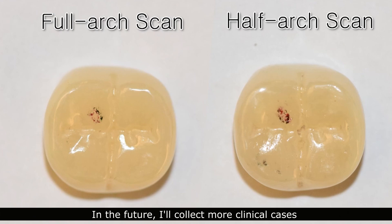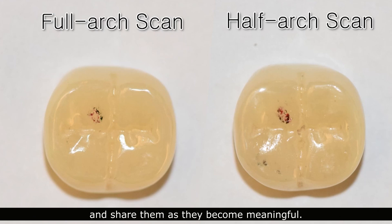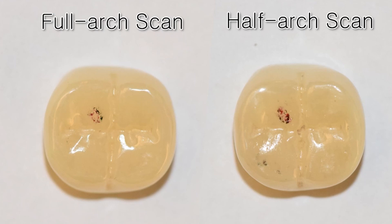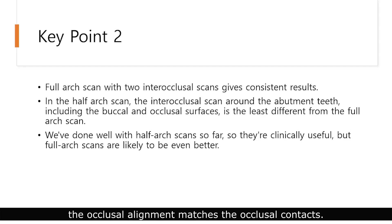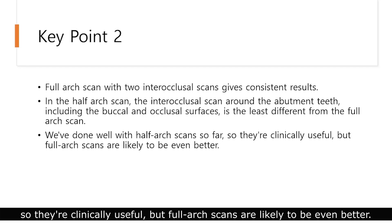This is the occlusal contacts of the two crowns. In the future, I will collect more clinical cases comparing full-arch scan to half-arch scans and share them as they become meaningful. The second key point: full-arch scan with two inter-occlusal records gives consistent results. When using a half-arch scan, it is useful to make sure that the occlusal alignment matches the occlusal contacts. We've done well with half-arch scans so far, so they are clinically useful, but full-arch scans are likely to be even better.